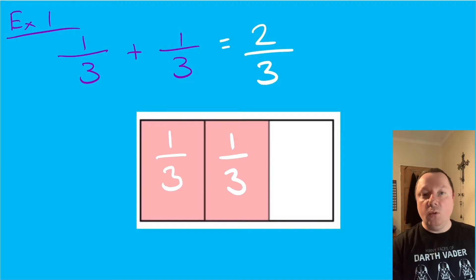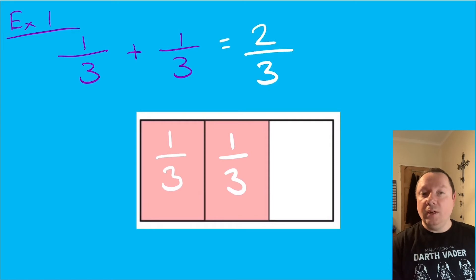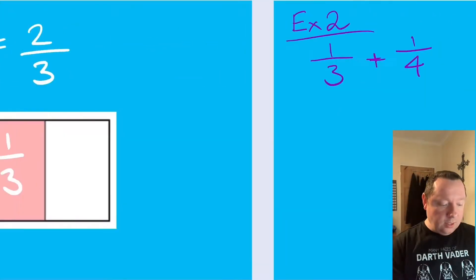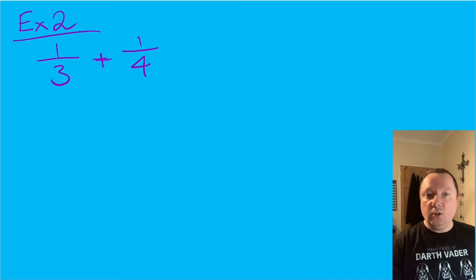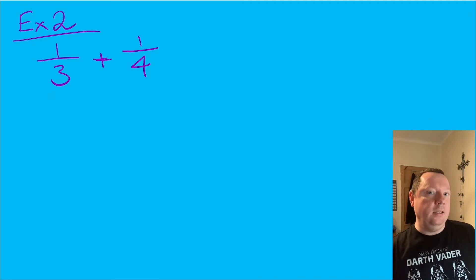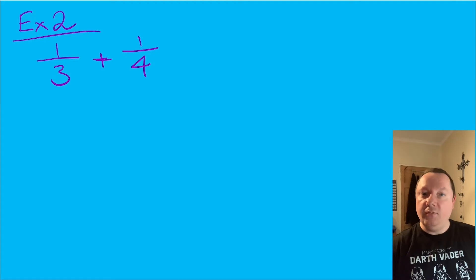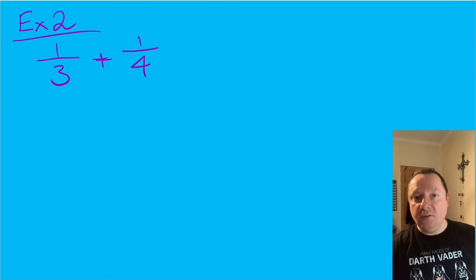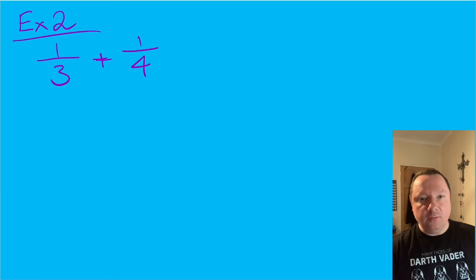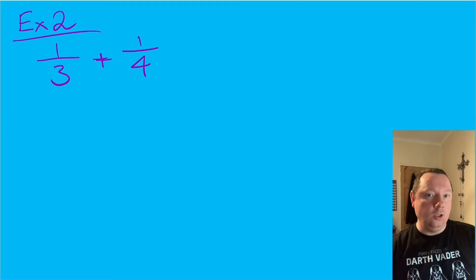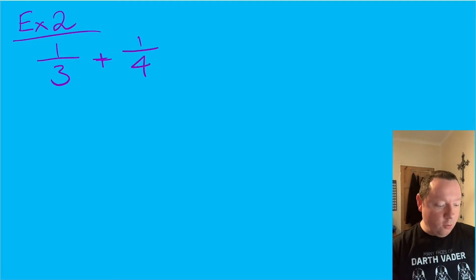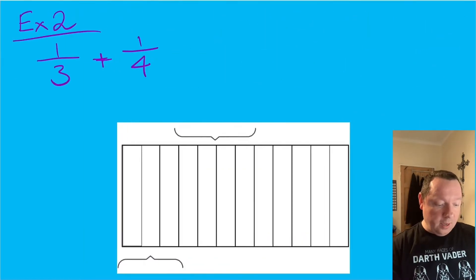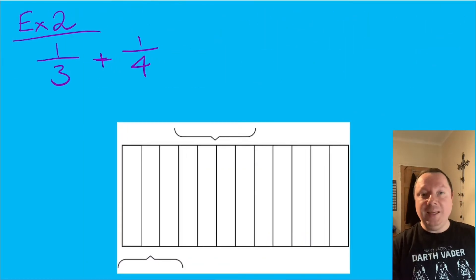Let's look at a slightly more complicated example for when the denominators are different and what we need to do to adjust. Example two: what's a third plus a quarter? If I draw a bar and split it into three, I'm not going to be able to split it into four as well. So I need a number I can split into both thirds and quarters. Three and four go into twelve, so I'm going to use a bar split into twelve pieces.